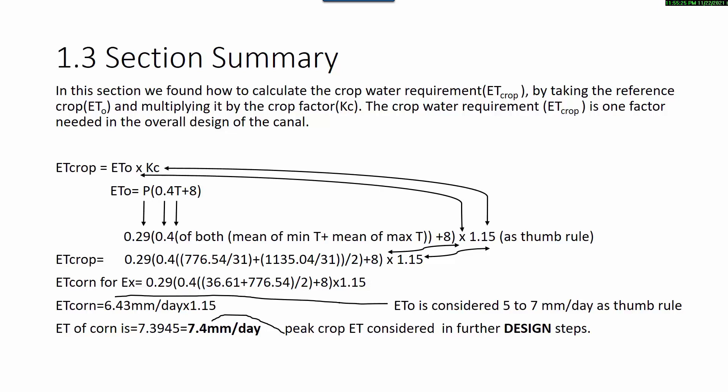We wanted to find the evapotranspiration of a peak crop, for example corn. The evapotranspiration of crop equals reference crop multiplied by crop factor. Reference crop equals the daily percentage of annual daytime hours multiplied by 0.46 times the mean temperature of the maximum and minimum temperatures for the whole month, plus 8.